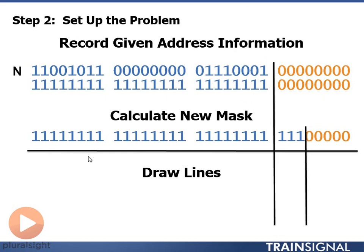Then I want to draw a second line. And the second line I draw is going to be between my calculated network portion and host portion which is after bit 27.